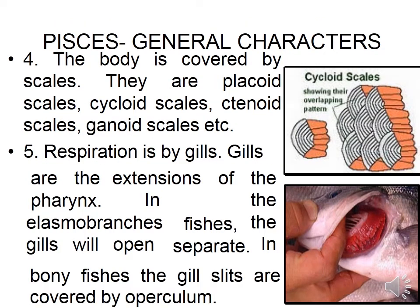The body is covered by scales of different types: placoid scales, cycloid scales, ctenoid scales, and ganoid scales. Placoid scales are found in Chondrichthyes forms. Respiration is by gills, which are extensions of the pharynx. In elasmobranchs, the gills open separately; in bony fishes, the gill slits are covered by the operculum — a bony plate — which is found in Osteichthyes.